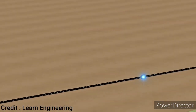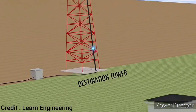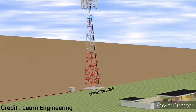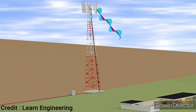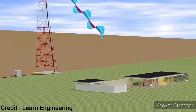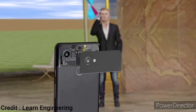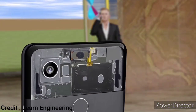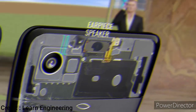Upon receiving the pulses, the destination tower radiates it outwards in the form of electromagnetic waves. Your friend's phone then receives the signal, performs reverse operations, and your friend finally hears your voice.